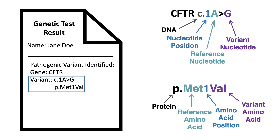The greater-than symbol means 'is changed to,' and the last letter tells us what letter this person has at that position. Altogether, this tells us that for letter one in the CFTR gene, most people have an A, but in this person, it is changed to a G.